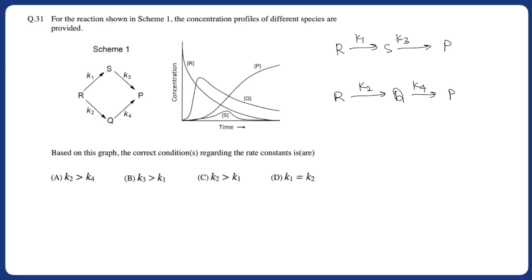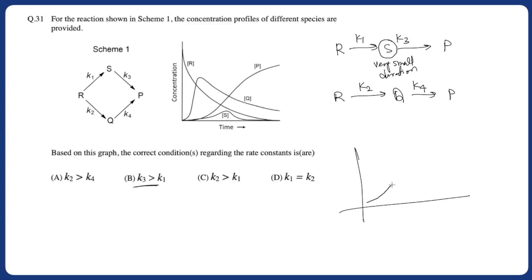The concentration of Q is first increasing and then decreasing. Let's look at the relationship between k1 and k3: k3 is greater than k1. That means the rate of formation of S is smaller because k1 is smaller, and k3 is bigger so rate of formation of P is fast. This means S is formed for a very small duration — S will slowly form but as soon as it forms it will dissociate and get converted into P.